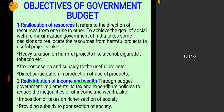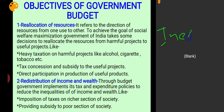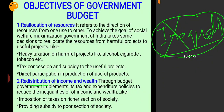The next objective is redistribution of income and wealth. As we know, there is inequality in the distribution of income and wealth in our country — some people have much more while others have much less. Because of this inequality, social welfare is low. So the government of India works to reduce inequalities by redistributing income and wealth.